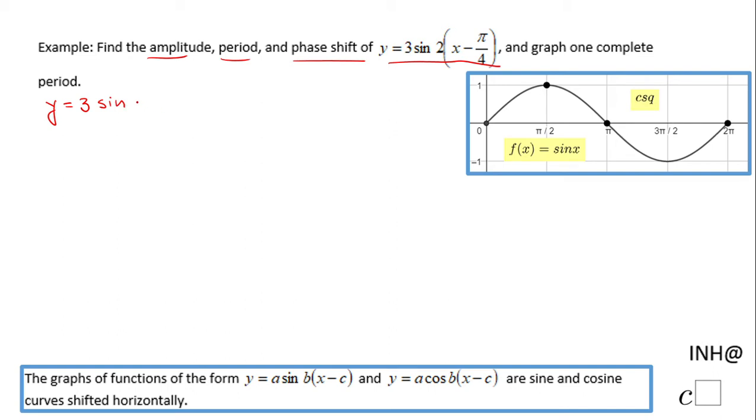These features will help us sketch one complete period. The first thing to notice is this number here, which is the 'a'. If you have a sine or cosine, that is the amplitude. The amplitude of this trigonometric function is 3.